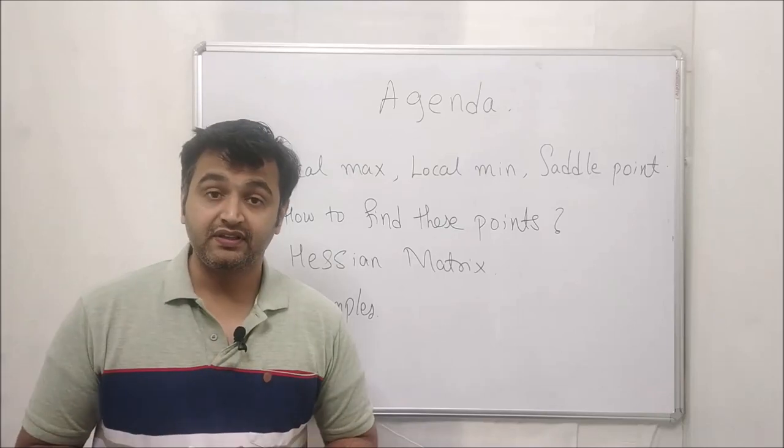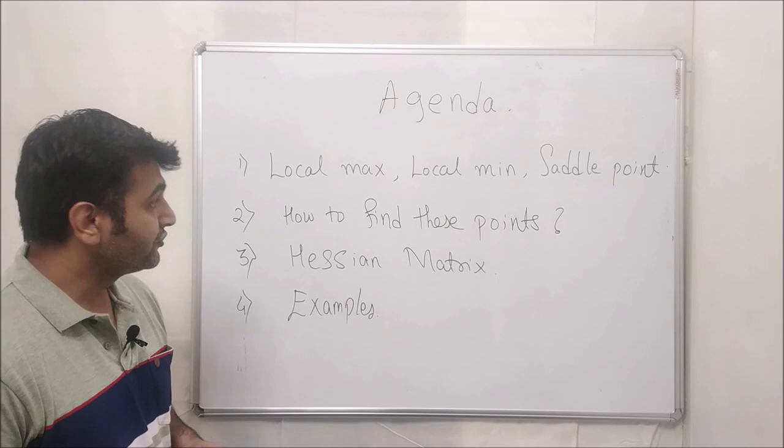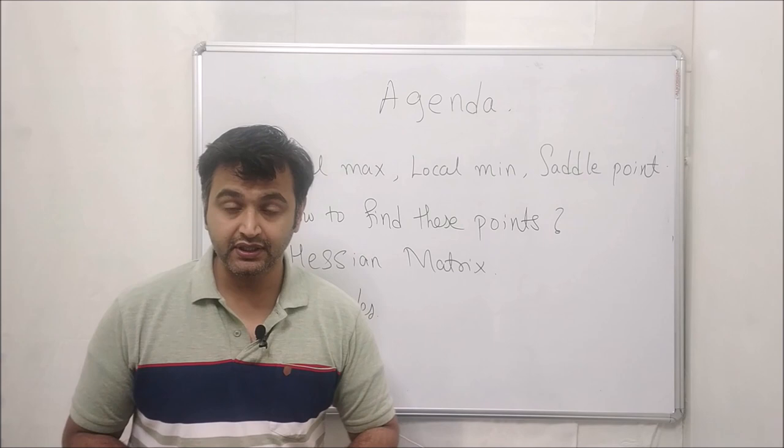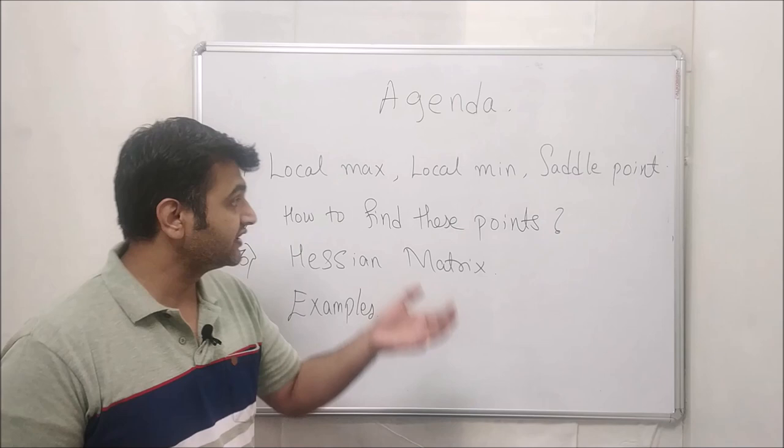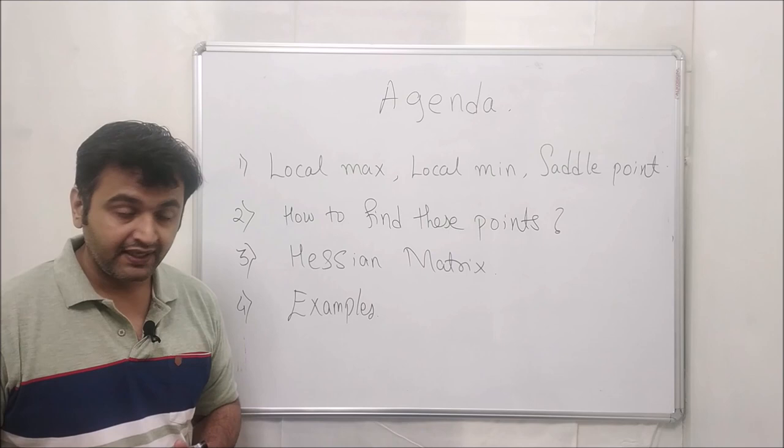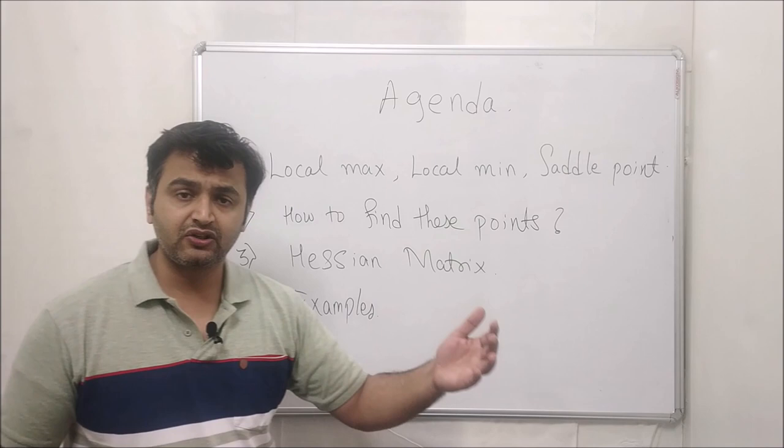Hello everyone, welcome to my playlist on functions of several variables. The agenda for today's session: we will see the notion of local maxima, local minima, and saddle point, then how to find these points where the function takes maximum or minimum values, and then the notion of the Hessian matrix. At the end we will see some examples.